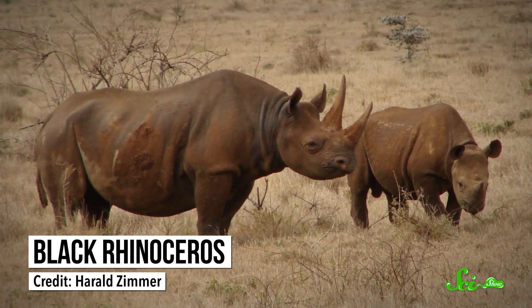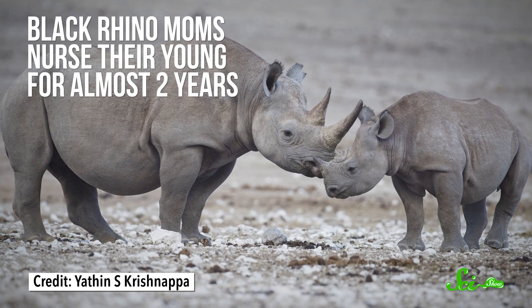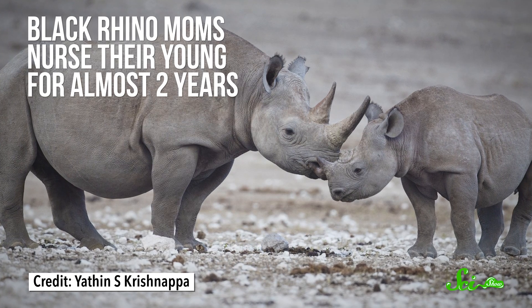At the opposite extreme, the skimmest known milk comes from the black rhinoceros, with a fat content of around 0.2%. The watery milk probably has to do with their long nursing period. Black rhino moms nurse their young for almost two years, and pouring a ton of fat into their milk for that long would use up a lot of resources.